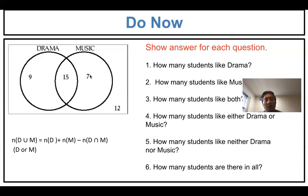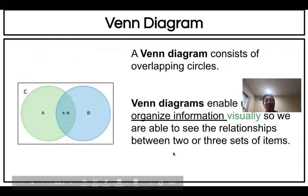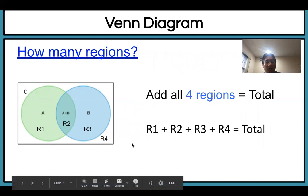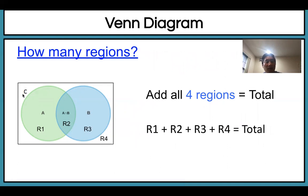How many students are there in all? 9, 15, 7, 12. If you add them all, 24 plus 7 is 31, plus 12 is 43.